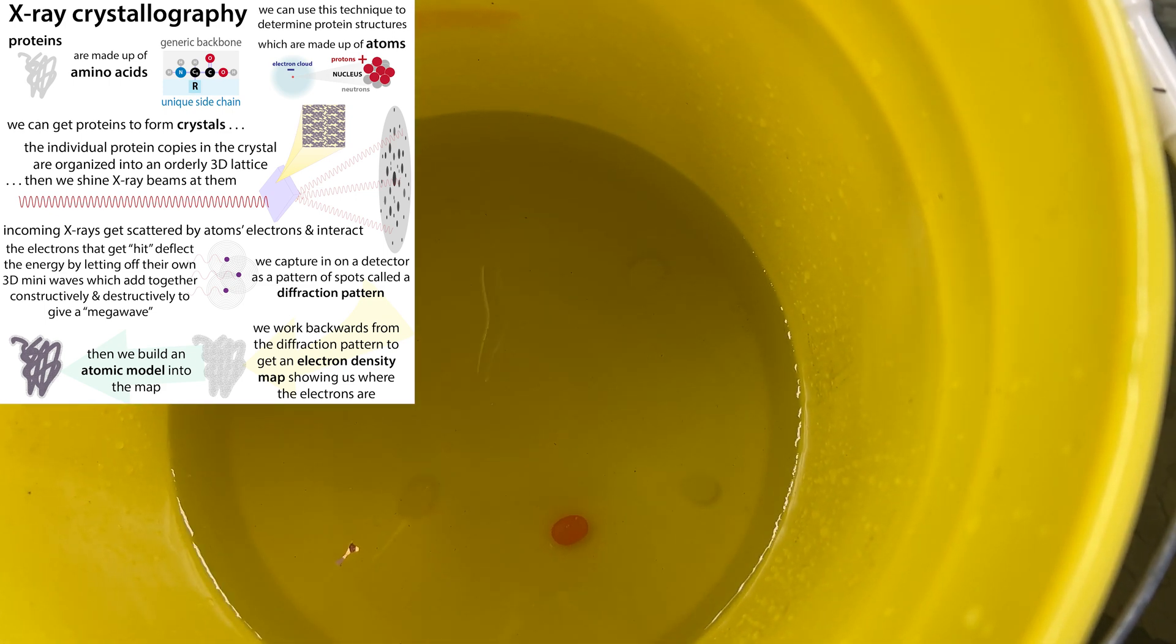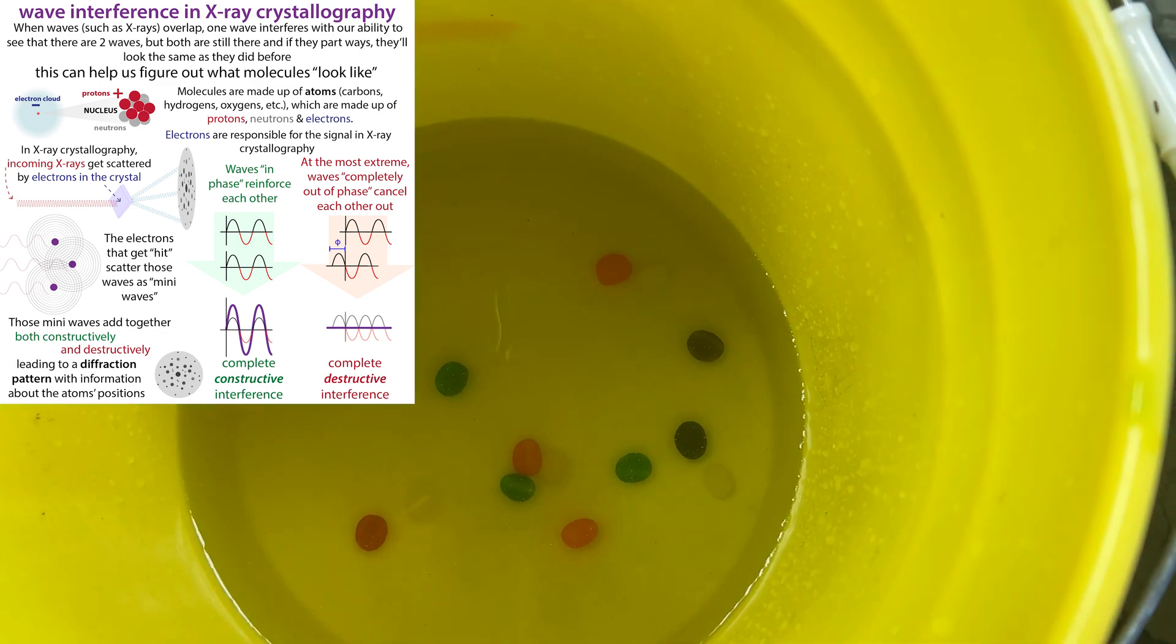And that's going to happen for each of the different atoms that the x-ray runs into. You don't just have one at a time, you have lots. When these interact, all those little ripples are going to add together and give you this mega wave.